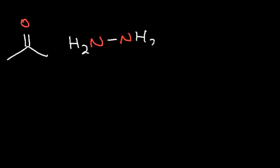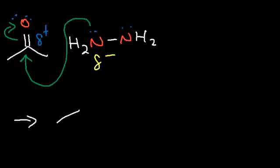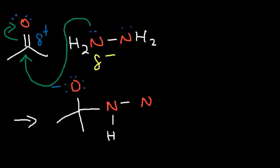Now let's go over the Wolff-Kishner reduction mechanism, starting with acetone reacting with hydrazine. The nitrogen atom has a partial negative charge, so it's attracted to the carbon atom which has a partial positive charge. This nitrogen adds across the carbonyl carbon, breaking the pi bond. We get an intermediate where the oxygen now has a single bond with three lone pairs and a negative charge, attached to a nitrogen that has two hydrogen atoms.